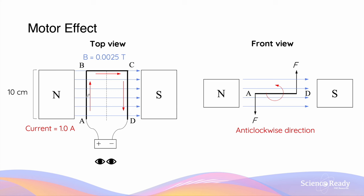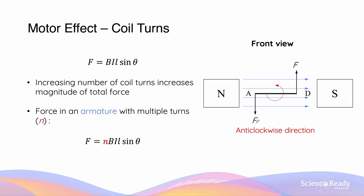This torque allows the single loop of wire to rotate in an anti-clockwise direction. So by producing motor effect forces on sides AB and CD using electrical energy — that is, current — we can produce torque and rotation of this loop of wire.